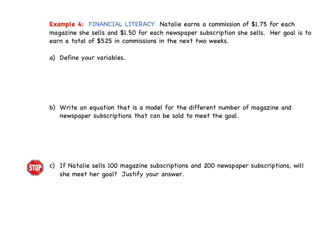Now let's turn to the last page of notes — some model problems. Natalie earns a commission of $1.75 for each magazine she sells and $1.50 for each newspaper subscription she sells. Her goal is to earn a total of $525 in commissions in the next two weeks. Step one in model problems is always to define our variables.